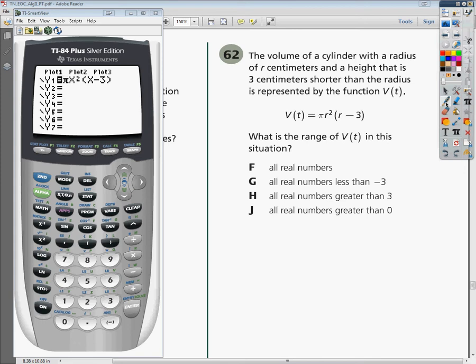The volume of a cylinder with a radius of r centimeters and a height that is 3 centimeters shorter than the radius is represented by the function V(t). And as you can see, there it is.